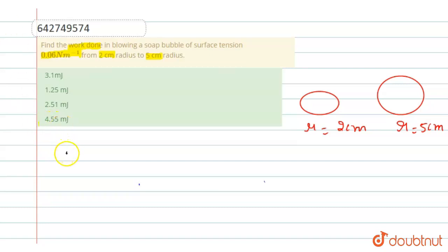Now we have to find the work done, W equals question mark. We know that work done equals surface tension into change in surface area.